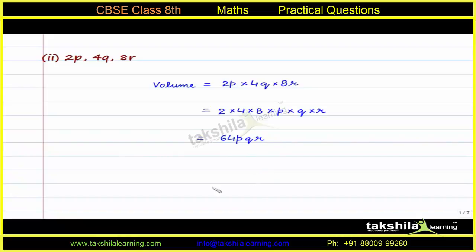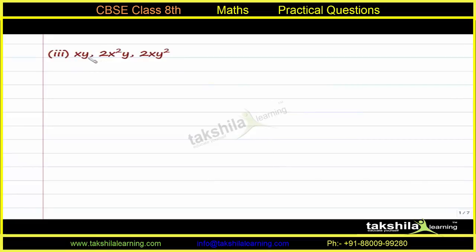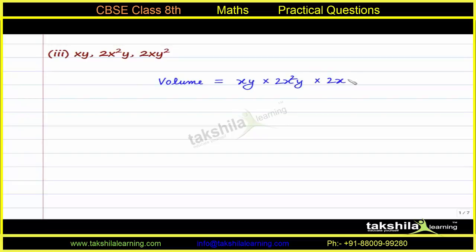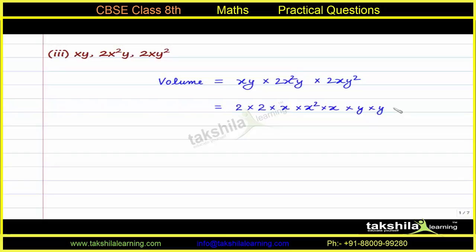In the third part, length is xy, breadth is 2x squared y and height is 2xy squared. Volume is xy into 2x²y into 2xy². Keeping like terms together: numerical coefficients give 2 into 2 equals 4. The x terms: x into x² into x gives x to the power 4. The y terms: y into y into y² gives y to the power 4. So the volume in the third case is 4x⁴y⁴.